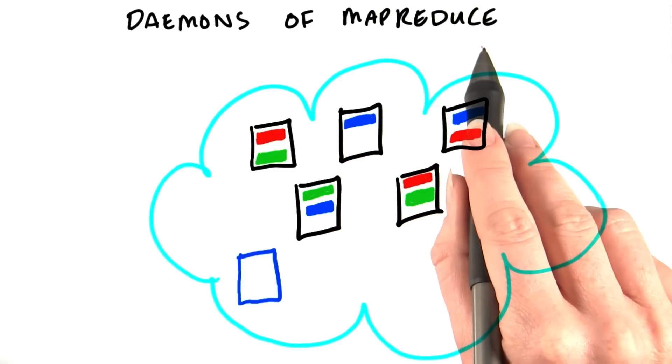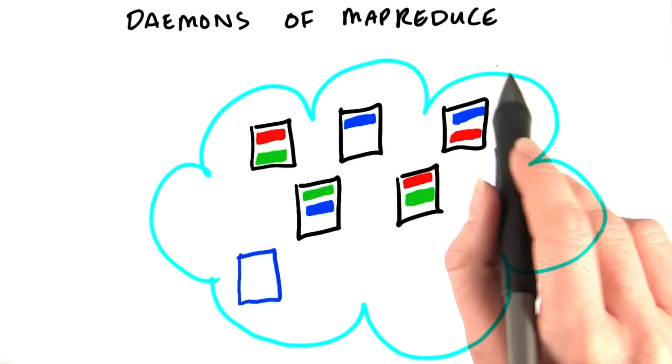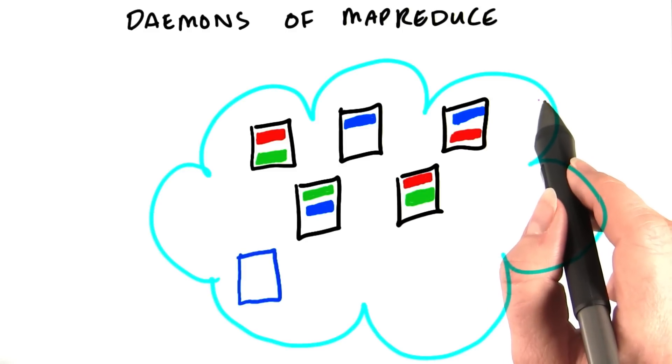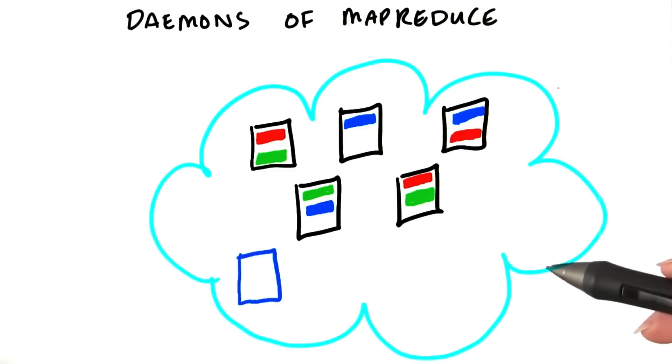So now we've seen conceptually how MapReduce works. In the next lesson, we'll talk about how to write the code to perform these MapReduce jobs on your cluster. But before that, let's go back to the cluster.